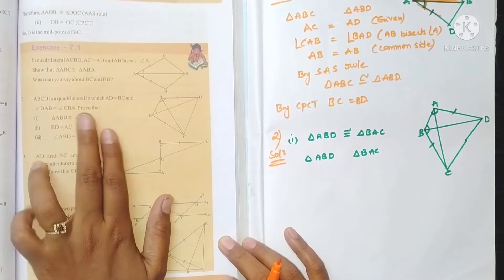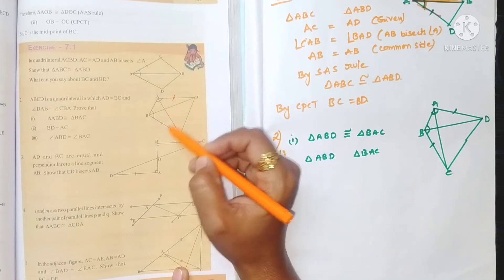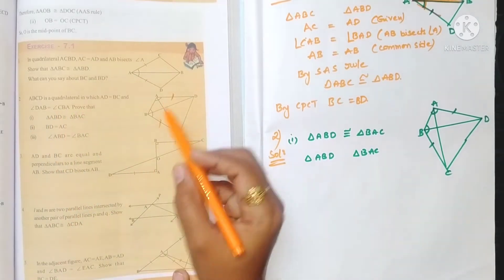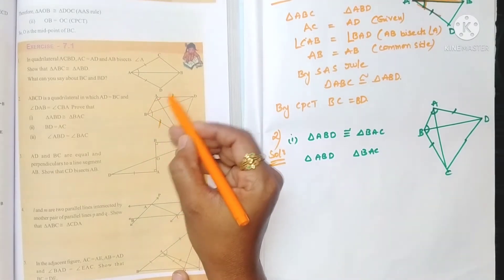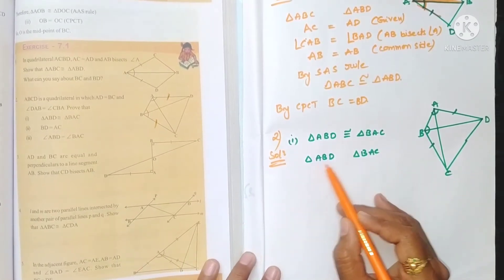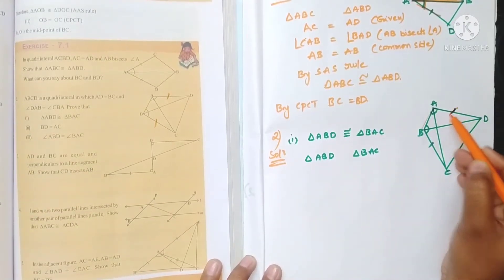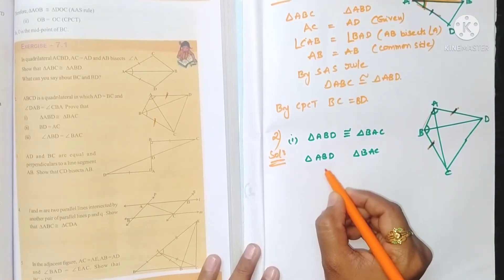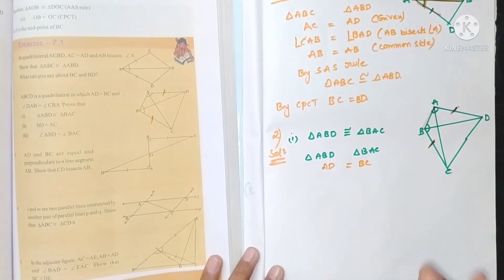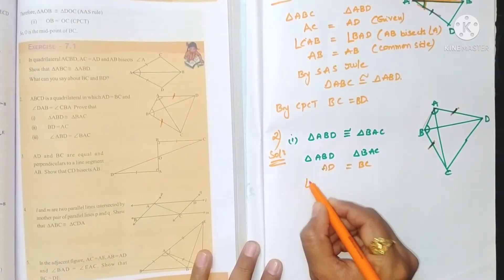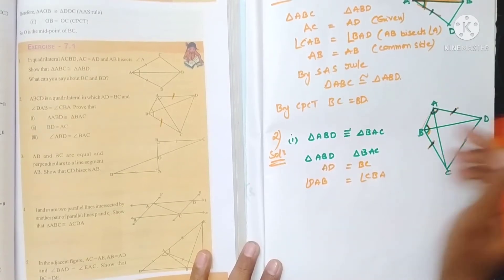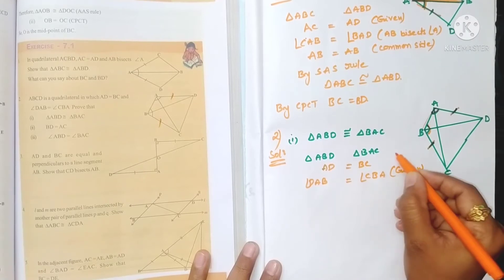Second problem: ABCD is a quadrilateral in which AD is equal to BC and angle DAB is equal to angle CBA. So these two angles are equal — this is given. We have to prove this. Compare triangle ABD and triangle ABC. In triangle ABD, AD is equal to BC. And angle DAB is equal to angle CBA — given.